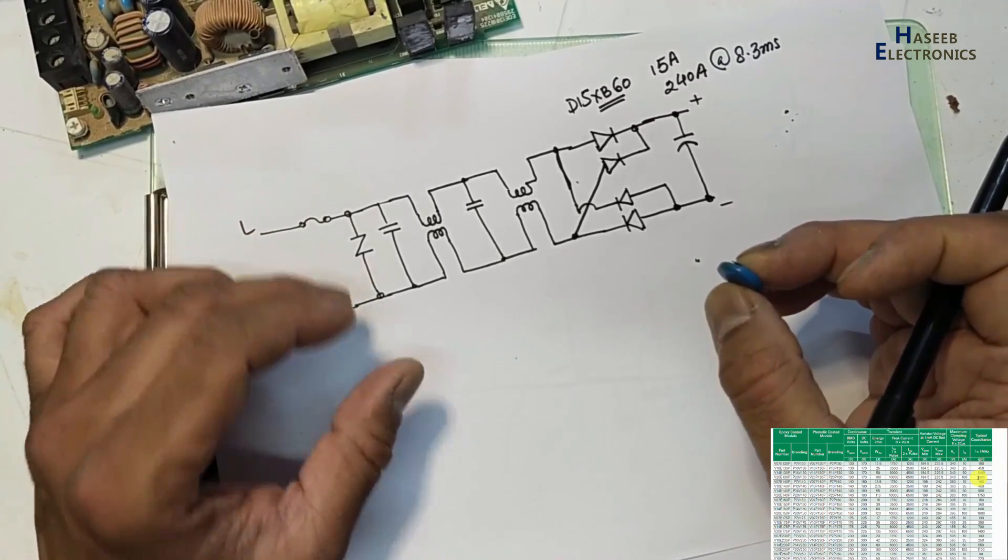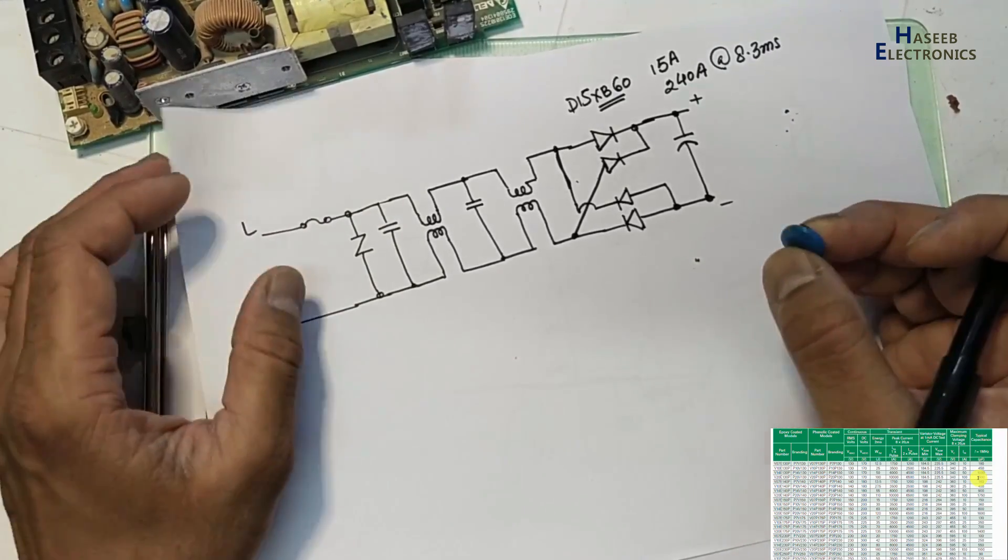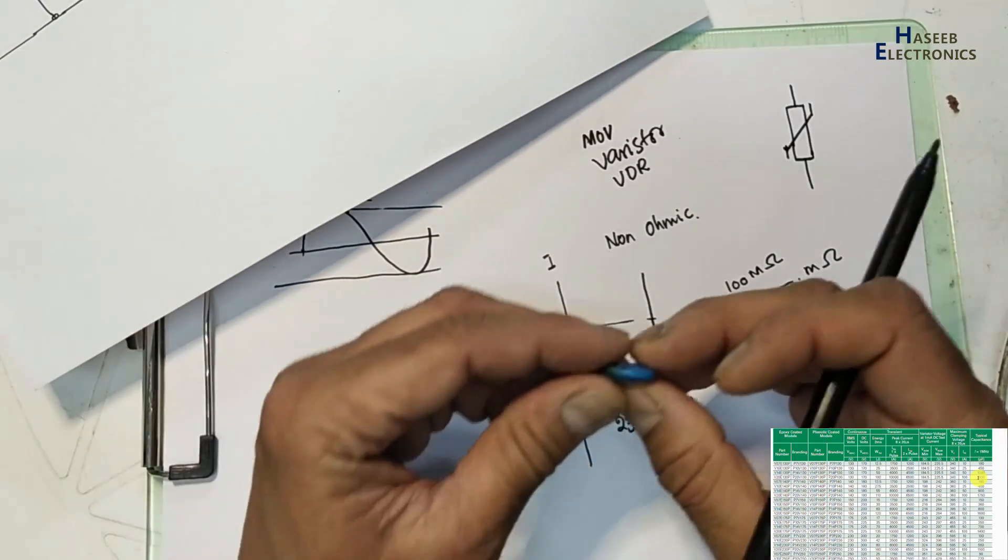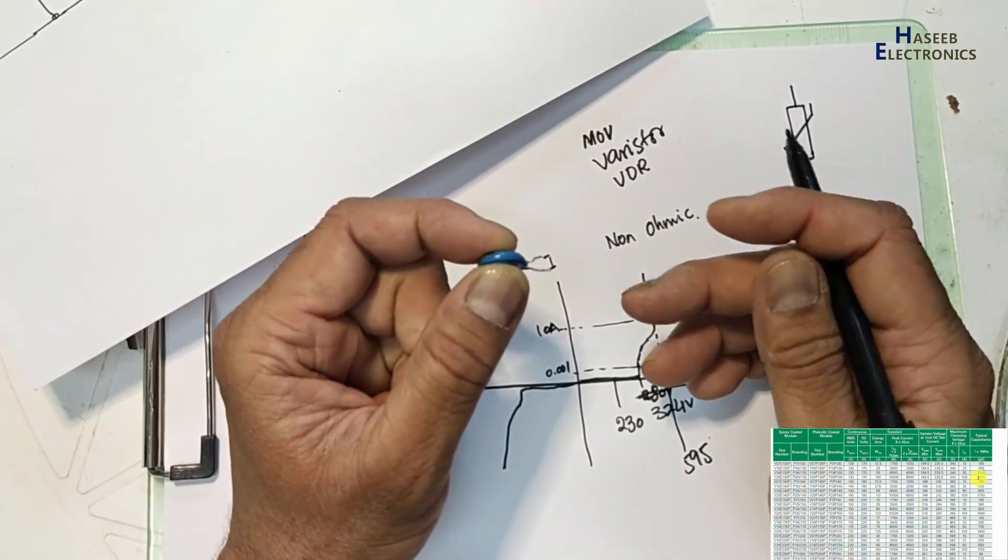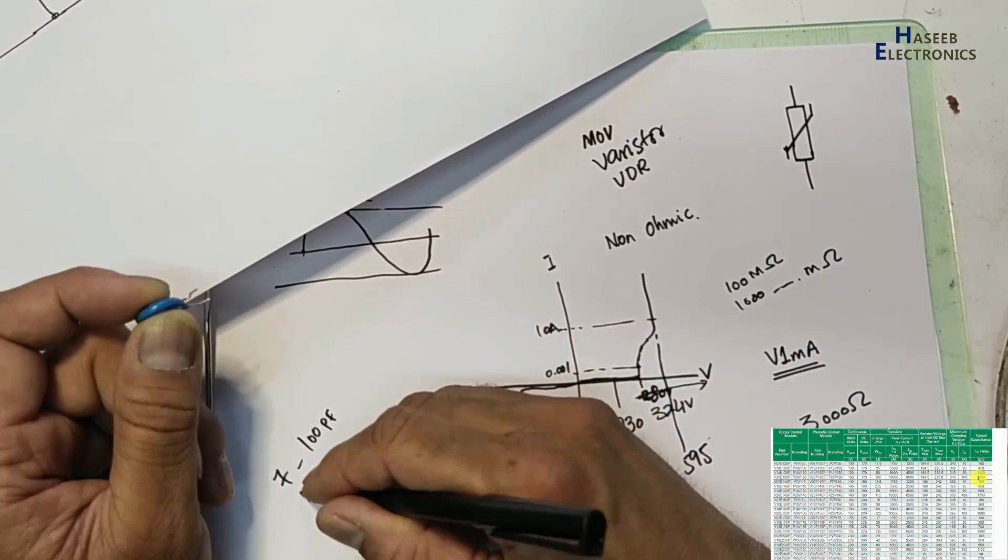Then the last - that is capacitance. When this MOV is working in continuous working voltage mode, below 1 milliampere, that is leakage current mode, that is high impedance mode - at that time it provides capacitance. Disk size 7: 700 picofarad. Disk size 10: 250. 14: 155.